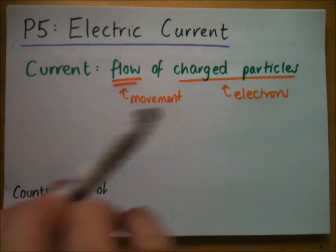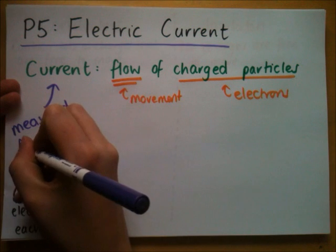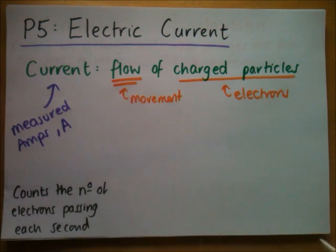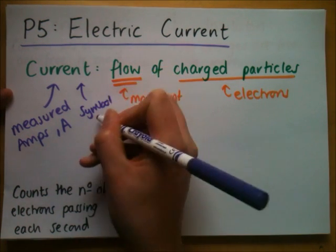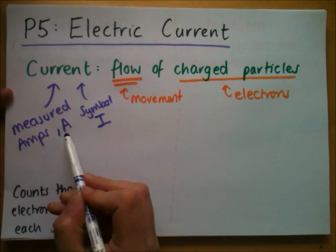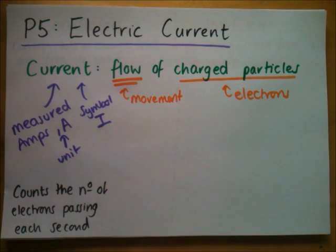Current is measured in something called amps — we actually mean amperes, but we all say amps, and the symbol is A. Ampere was a French physicist who discovered a lot about electricity, and that's why he's been memorialised by having this unit named after him. Current has a symbol as well: if you ever write an equation with current in it, you use the symbol I. This can be confusing because the unit is A and the symbol is I — just like speed equals distance over time, where distance has symbol D but is measured in metres, M.